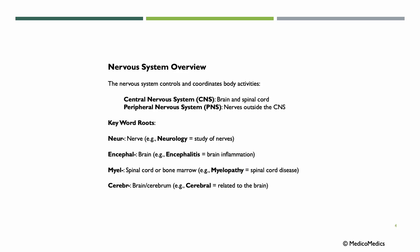Let's begin with the nervous system. The nervous system controls and coordinates body activities. It consists mainly of the central nervous system, or the CNS, which includes the brain and spinal cord, and then we have the peripheral nervous system, PNS, the nerves outside of the CNS.